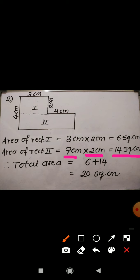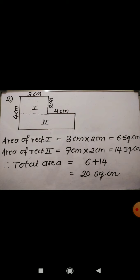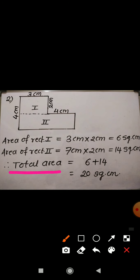So this is the area of the second rectangle. Hence the total area of the figure will be 6 plus 14, that is 20 square cm.